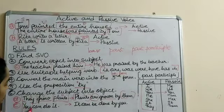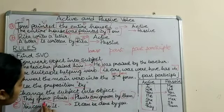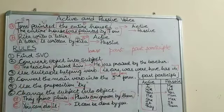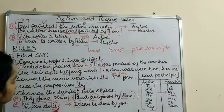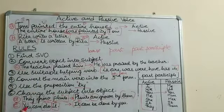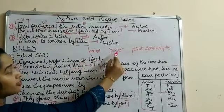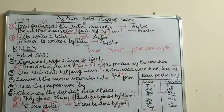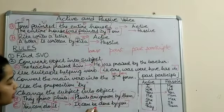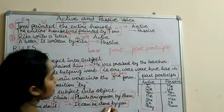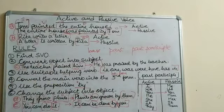Another example: 'You can do it.' 'You' is the subject, 'do' is the main verb, and 'it' is the object. When converted to passive, 'it' becomes the subject and 'you' becomes the object. 'Do' is the base form; the past participle is 'done' — we have do, did, done. So 'done' is used along with the helping verb 'be' and the preposition 'by.'